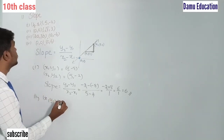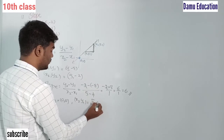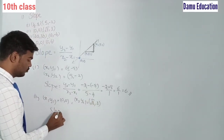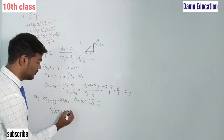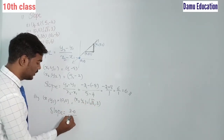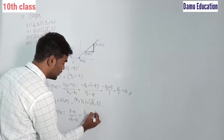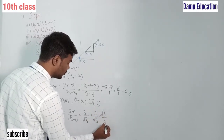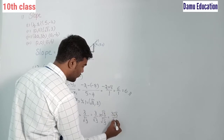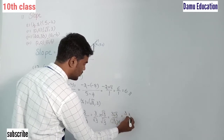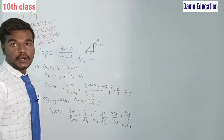For the second example, x1, y1 = (0, 0) and x2, y2 = (√3, 3). Slope = (y2 - y1) / (x2 - x1) = (3 - 0) / (√3 - 0) = 3/√3. Rationalizing: (3/√3) × (√3/√3) = 3√3/3 = √3. So the slope for the second example is √3.